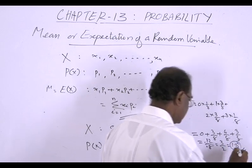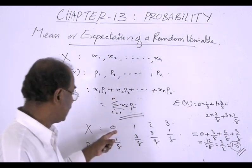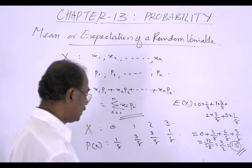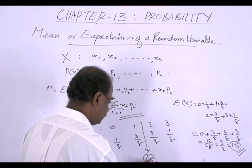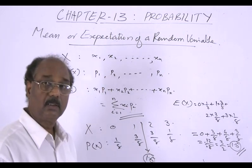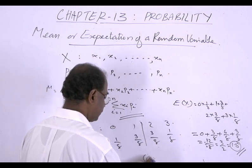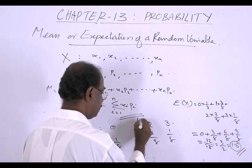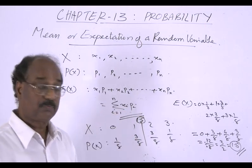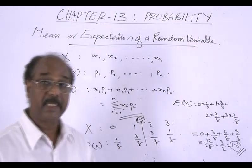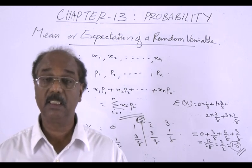So 1.5 is the expectation — almost a middle value of x. We see the values 0, 1, 2, 3, and the expectation comes in the middle at 1.5. That is the expectation, or mean, of the random variable x.